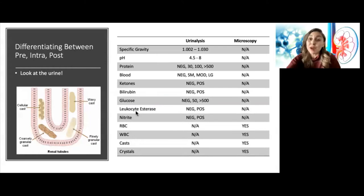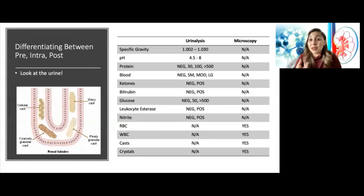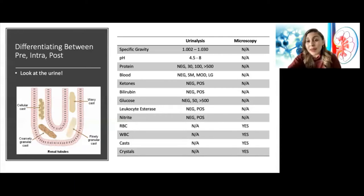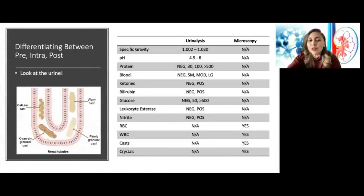Leukocyte esterase is a breakdown product of white blood cells, whereas nitrite is a breakdown product of bacteria. When both are positive together, it raises suspicion for infection or pyelonephritis. If only leukocyte esterase is positive — meaning white blood cells in the urine — nitrite is negative, and urine culture is negative, then look at medications or other etiologies like interstitial nephritis. On urine microscopy we see cellular components: red blood cells, white blood cells, casts, or crystals.